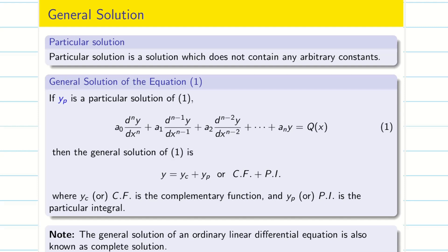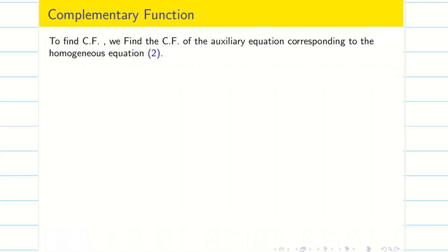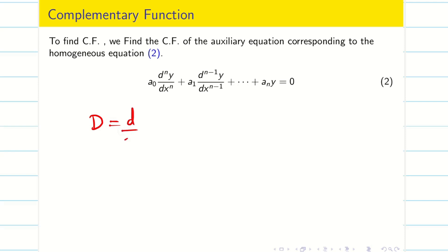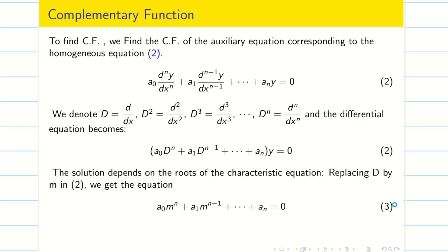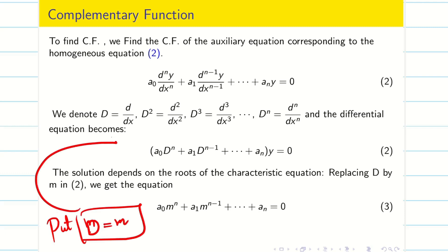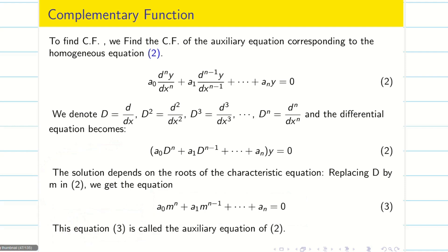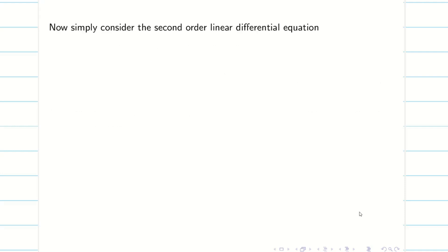Next we are going to find the complementary function for the given differential equation. To find CF, first we make the auxiliary equation corresponding to equation 2. I write D = d/dx, D² = d²/dx², etc. Replacing in equation 2 gives: a₀Dⁿ + a₁Dⁿ⁻¹ + ... + aₙ, all multiplied by Y, equal to 0. To find the solution, I substitute D = m to get the auxiliary equation, which is a polynomial of degree n. Solving this equation gives n roots: m₁, m₂, ..., mₙ.